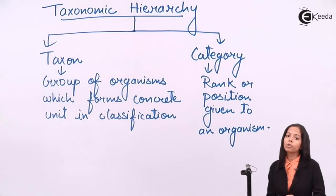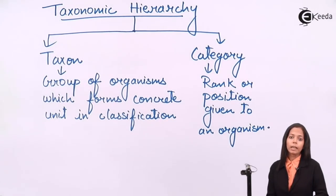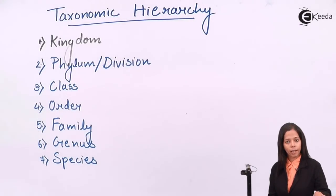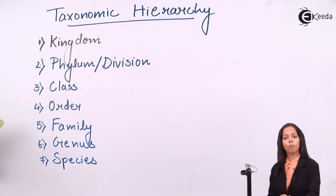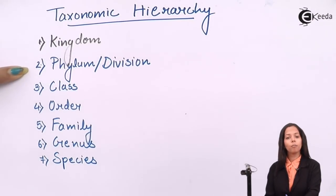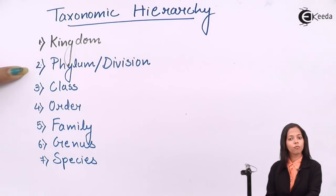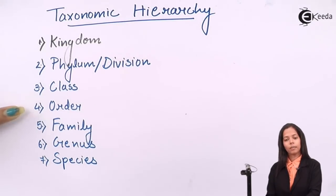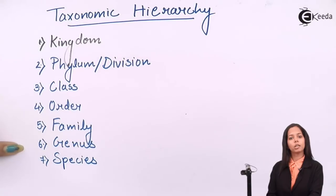Now, what are the positions present in taxonomic hierarchy? From top to bottom, the top position is kingdom. Next comes phylum or division — phylum is used for animals and division for plants. Followed by class, then order, then family, genus, and species.